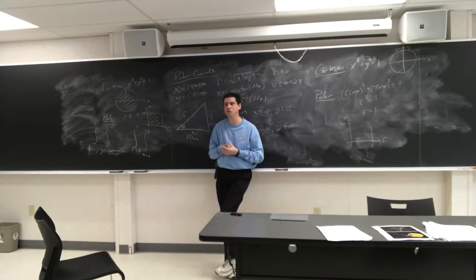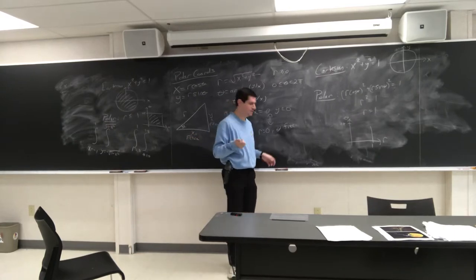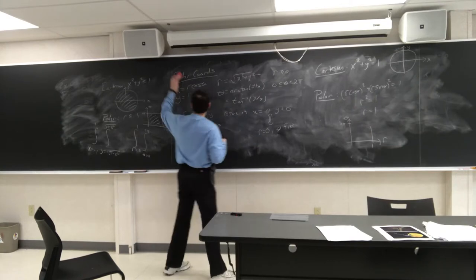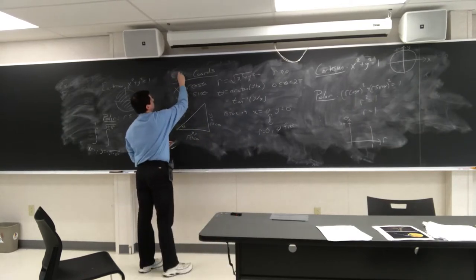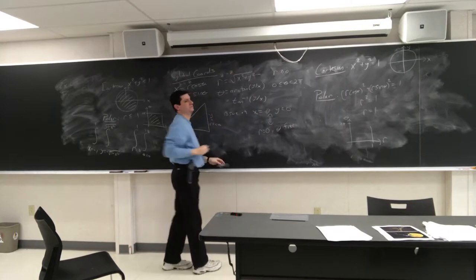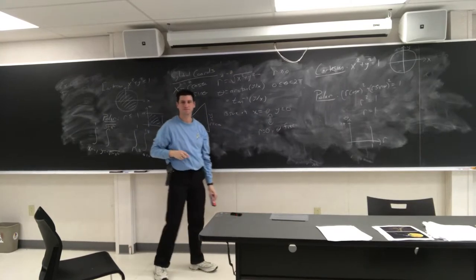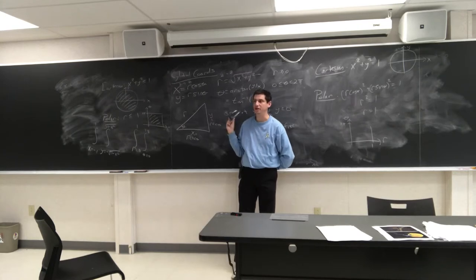Building on the success of polar coordinates, it's time to go up to cylindrical coordinates. Cylindrical coordinates are extremely easy if you know polar coordinates — essentially all that happens is you just add z equals z. That's it, really not much of a change.